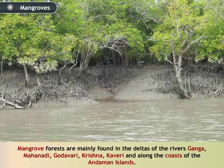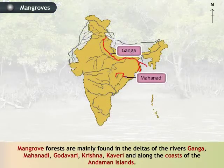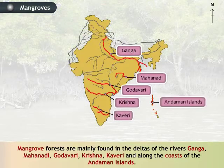Mangrove forests are mainly found in the deltas of the rivers Ganga, Mahanadi, Godavari, Krishna, Kaveri and along the coasts of the Andaman Islands.